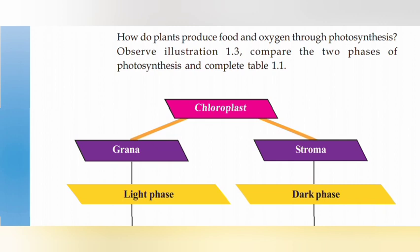Photosynthesis takes place in chloroplasts. Photosynthesis takes place in two phases: the light phase and the dark phase. The light phase takes place in chloroplasts — specifically in a stack of sacs called coins or grana. This is the grana inside the chloroplast.